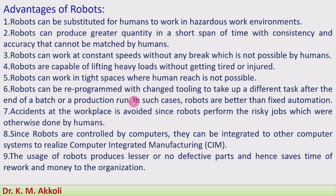Robots can be reprogrammed with a change of tooling to perform a different task after the end of each batch or production run. In such cases, robots are better than fixed automation. Since robots are reprogrammable machines, we can reprogram them for any other task once one task is over. This is the flexibility we can get from robots, allowing different works and different tasks to be carried out.